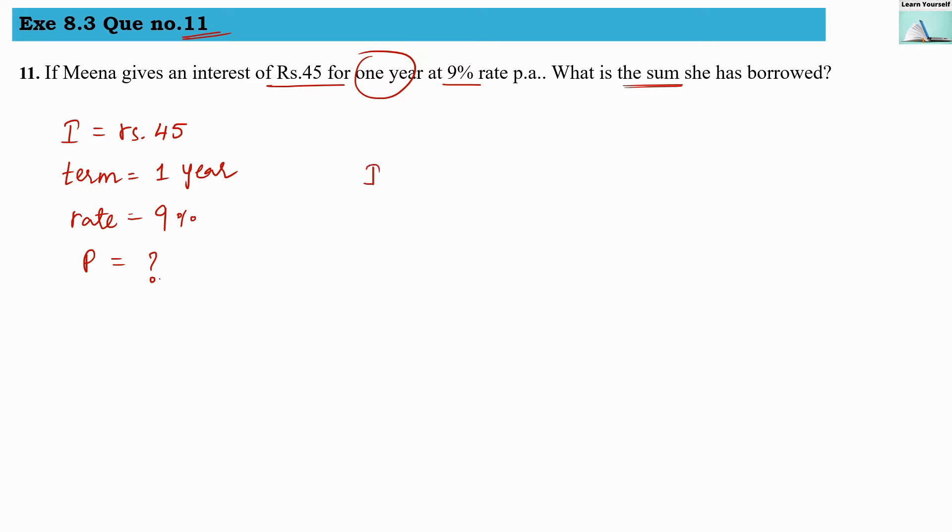So I equals to PRT in division with 100. Interest we know is 45, P we are going to find out, rate is 9, term is one year in division with 100. So P will be equal to 45 in multiplication with 100 in division 9. So 9 fives are 45, so 5 into 100 will give us 500.